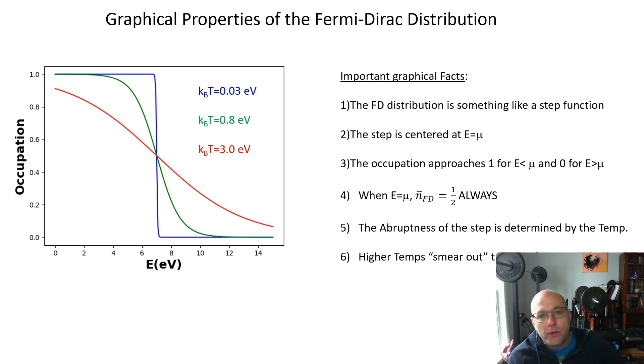In this class it's really important that you are able to analyze and understand graphs of the Fermi-Dirac distribution. I almost always ask something about this on exams. So let's talk about some of the graphical properties of the Fermi-Dirac distribution. The distribution in general looks a little bit like a step function. Here I've plotted it for three different temperatures. It's always kind of a step. At very low temperature, so this is actually sort of near room temperature, it's a pretty sharp step. And as you increase the temperature the step gets quite broad and smeared out.